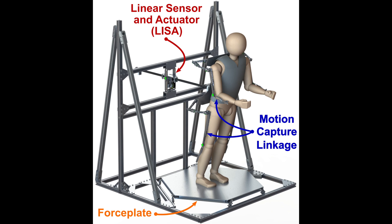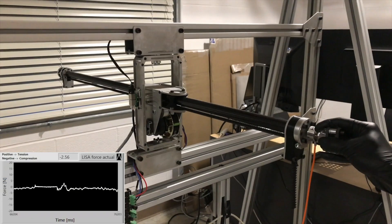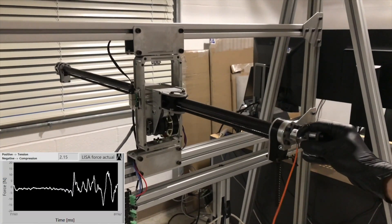The HMI consists of three subsystems: the linear sensor and actuator, Laser, the force plate, and the motion capture linkage. Laser senses the human's center of mass position and applies feedback forces to the human. It is a three-degree-of-freedom serial mechanism with high backdrivability and bandwidth.